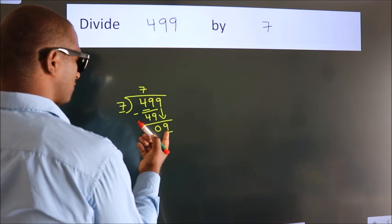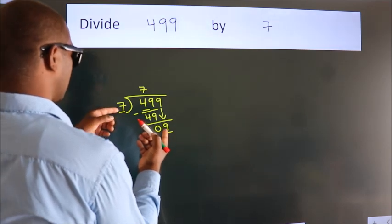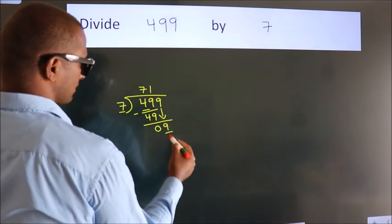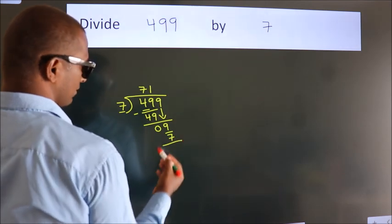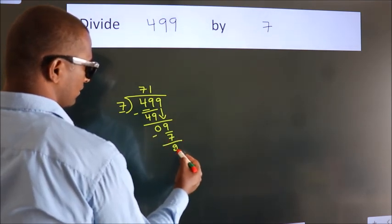A number close to 9 in 7 table is 7 1s 7. Now we subtract. We get 2.